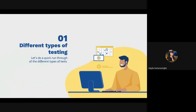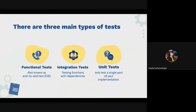The first thing we're going to look at is the different types of testing. We have three main types of tests used in software: functional tests, also known as end-to-end tests, integration tests, and unit tests. The smallest is the unit test — just as the name explains, with unit tests we test only a single part of our implementation.